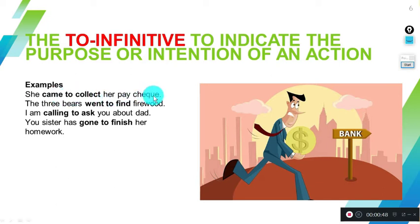For example: She came to collect her paycheck. Why did she come? To collect her paycheck. The three bears went to find firewood. Why did they go? To find firewood. When using the to-infinitive, we're explaining the purpose or intention of something, explaining why we're doing something.